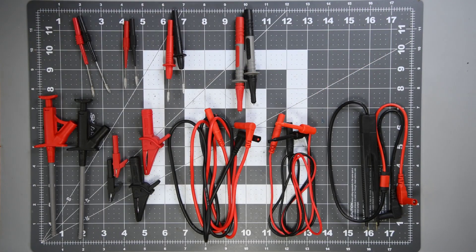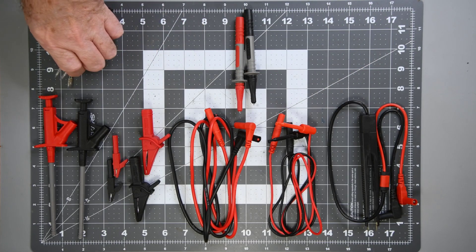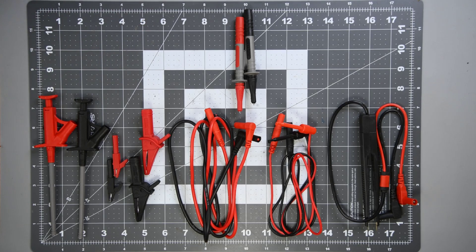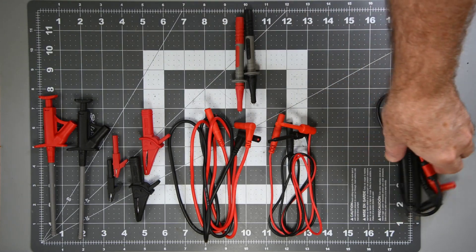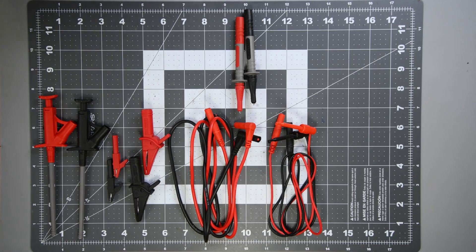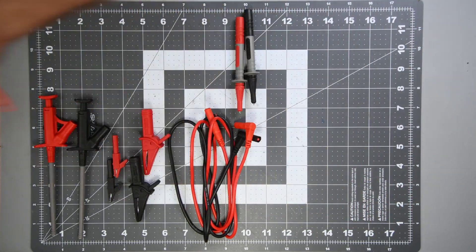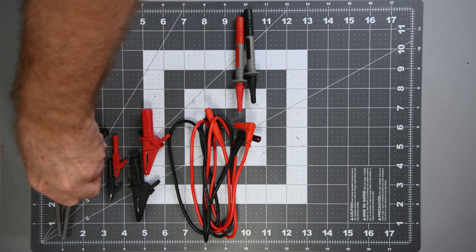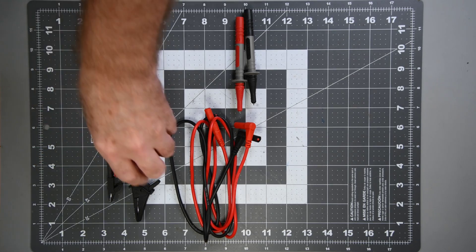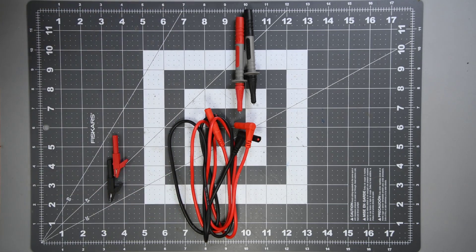You get a lot of pieces for $43. Seem to be reasonable quality. Do you need three sets of insulation piercing probes? Not really. If I was putting the kit together, I would drop a few of the probes and add 12 more inches to the lead set. I really think that would be more useful.